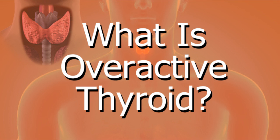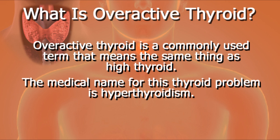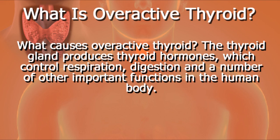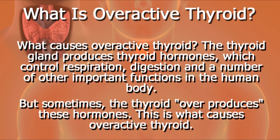Overactive thyroid is a commonly used term that means the same thing as high thyroid. The medical name for this thyroid problem is hyperthyroidism. The thyroid gland produces thyroid hormones, which control respiration, digestion, and a number of other important functions in the human body. But sometimes the thyroid overproduces these hormones, and this is what causes overactive thyroid.